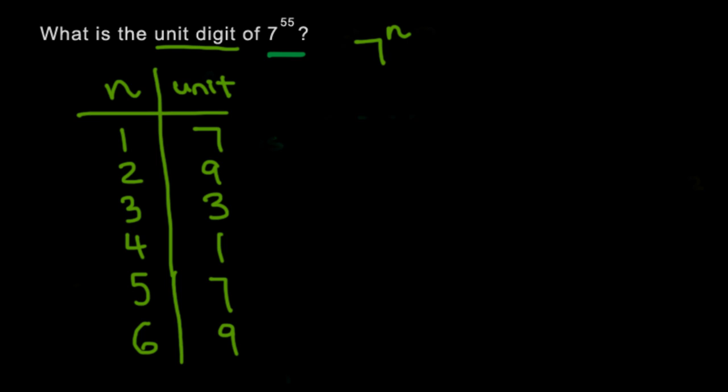So you probably noticed while I was writing this table that the values repeat. So 7, 9, 3, 1, 7, 9 is going to be 3, 1, 7, 9, 3, 1, just like that. So the unit digit of this number 7 to the power of n repeats every 4 numbers.